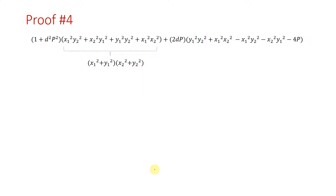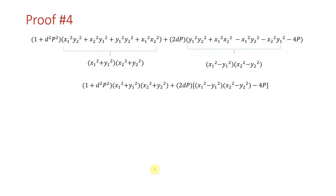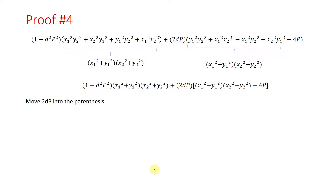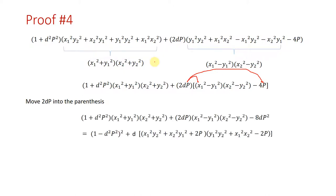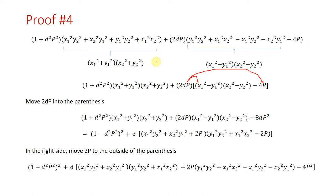This term can be rewritten as a multiplication, and this other term can also be written as a multiplication. Moving two times dp into the parentheses and on the right side moving d to the outside of the parentheses, the manipulations on the left side of the equation are complete. Now it's time to manipulate the right side.